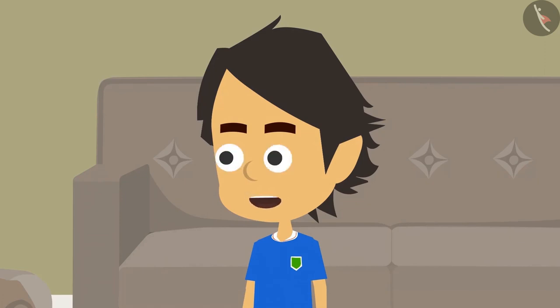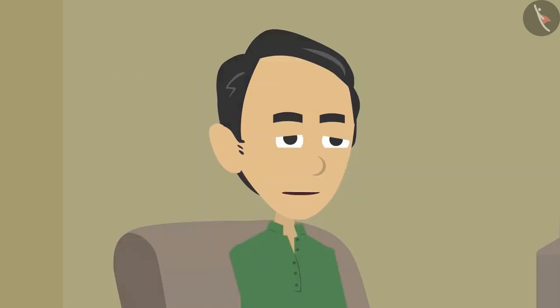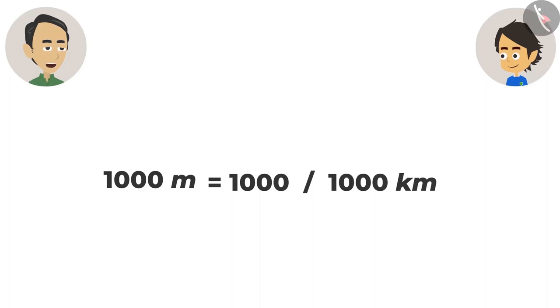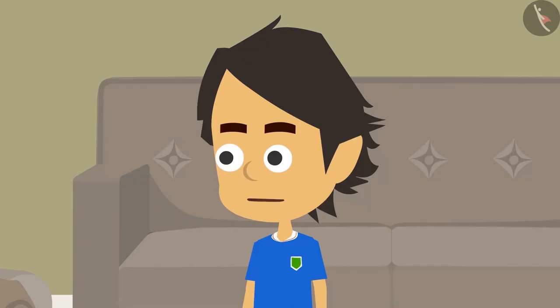But if we are given in meters, how will we convert it into kilometers? Very easy — to convert meters into kilometers, divide by 1,000. For example, if 1,000 meters is to be converted into kilometers, divide by 1,000 — the answer will be one kilometer. Got it!